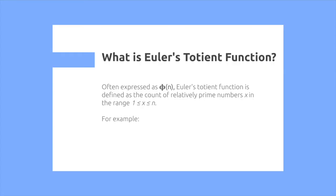Euler's totient function, often expressed as phi of n, is defined as the count of relatively prime numbers x in the range 1 is less than or equal to x is less than or equal to n.